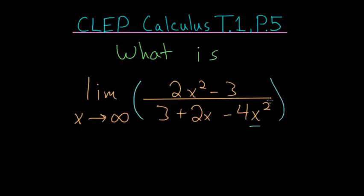And since that is the highest power of x, what we can do is multiply the top and bottom by 1 divided by x squared. Or another way to think about it is dividing the top and bottom by x squared.